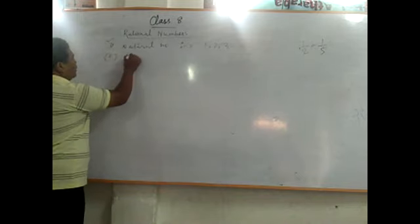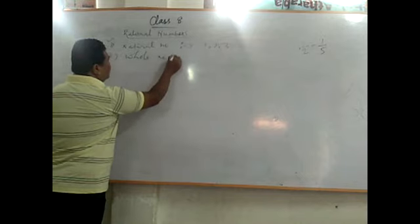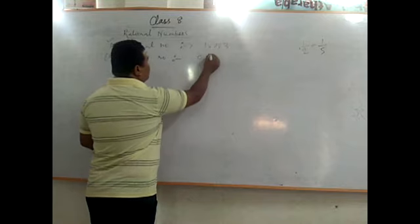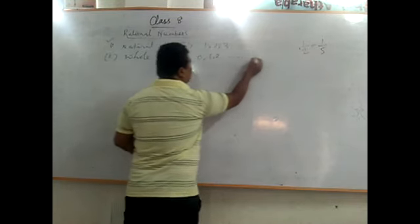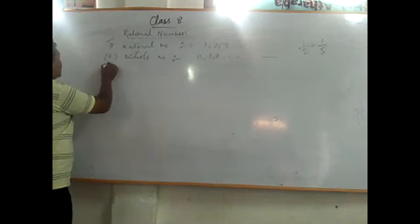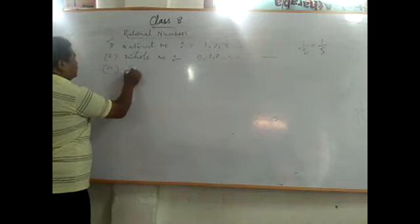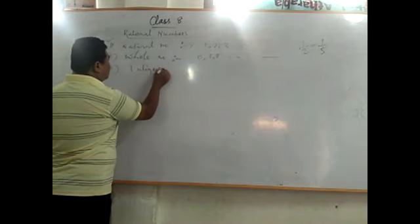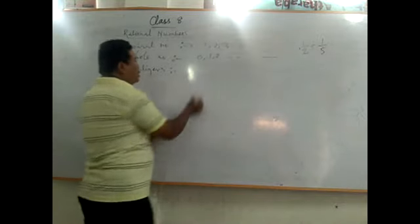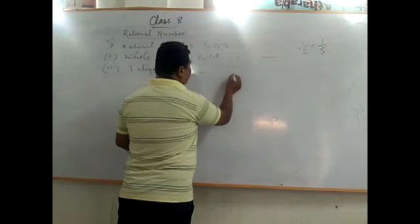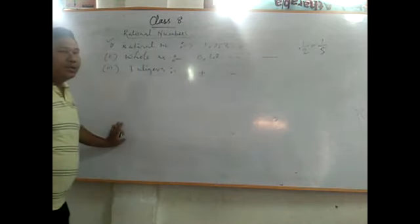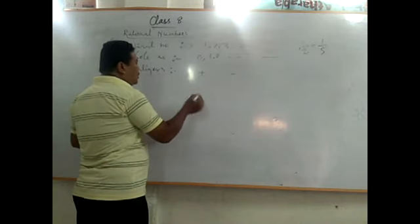What is a whole number? A whole number is the number which starts from 0, 1, 2, 3, and so on. Now the next one is integers. What are integers? Integers are numbers with positive as well as negative values — a collection of positive numbers and negative numbers along with 0.